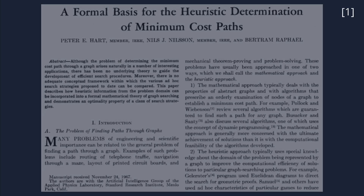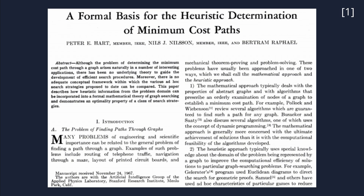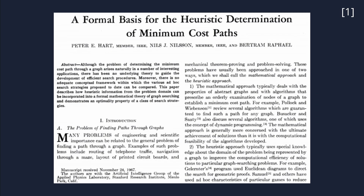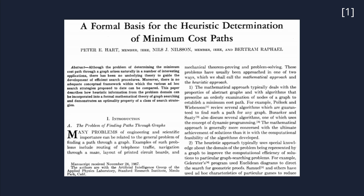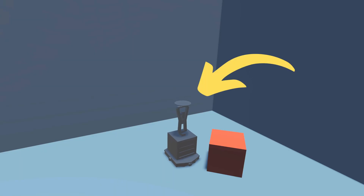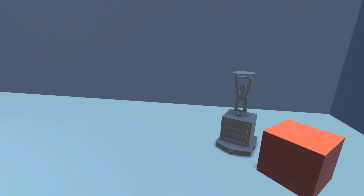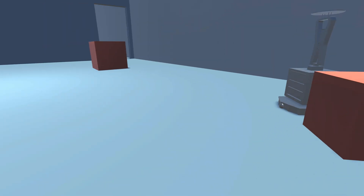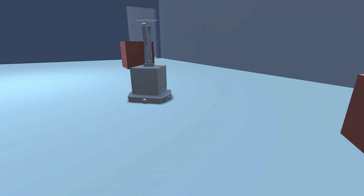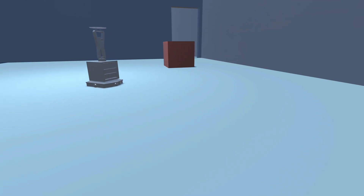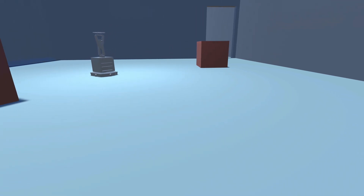The A* algorithm was first published in a paper in 1968 after being developed during the Shakey project, where a robot, Shakey, was required to calculate and follow a path around its environment. It has since become one of the most popular graph traversal algorithms.